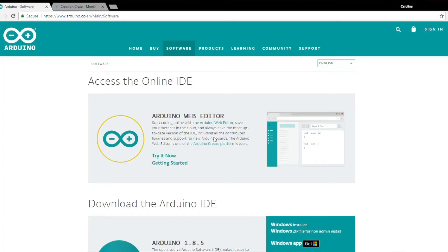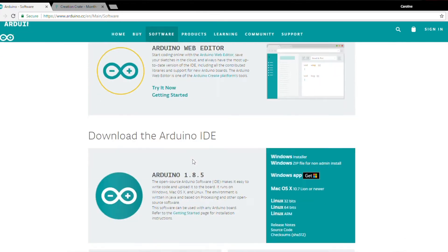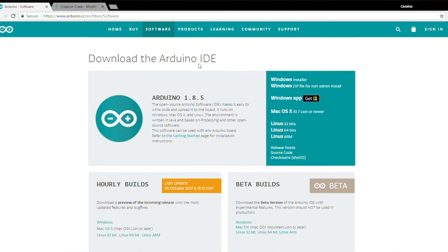First thing we need to do is go to the Arduino website arduino.cc main software. Download the software. If you've already done this, that's great. This is a one-time thing you've got to do to get this going. They present the online editor. They recommend that you download the IDE. It's a Windows installer unless you have a Mac.